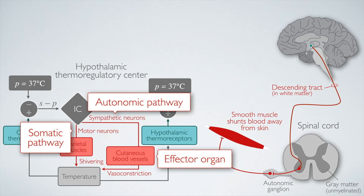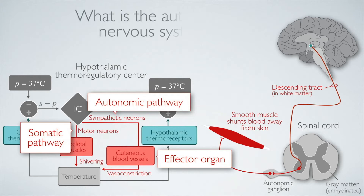There's only one type of somatic pathway, and it includes skeletal muscles as the effector organ. Autonomic pathways are more diverse — there are three major types, and they have a variety of effector organs. This mini-lecture focuses on that and addresses the question: what is the autonomic nervous system?